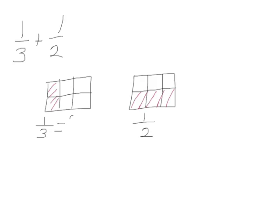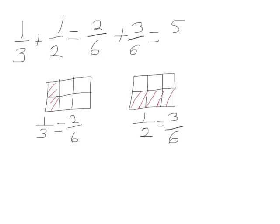I have two-sixths and I have three-sixths. So when I add one-third plus one-half, I'm adding two-sixths plus three-sixths and that is the same as five-sixths.